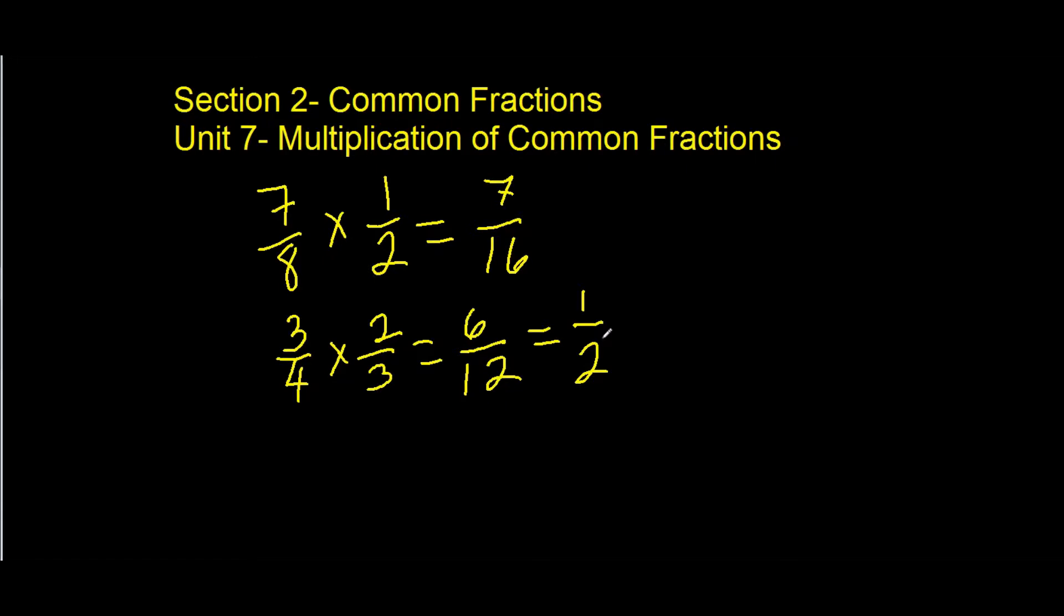Now, the second principle of multiplication of fractions is that if you have a fraction with a numerator that is larger than the denominator, the fraction is written as a mixed number by dividing the numerator by the denominator. The number of times the denominator goes into the numerator evenly is the whole number portion. If there is a remainder, it becomes the numerator of the fractional part. The original denominator is then used as the new denominator.